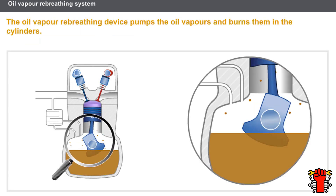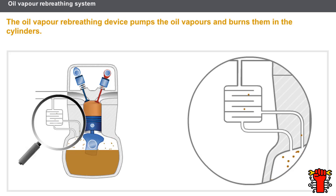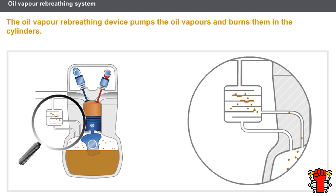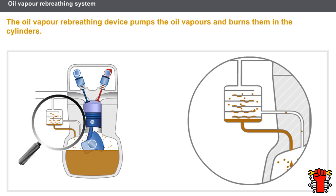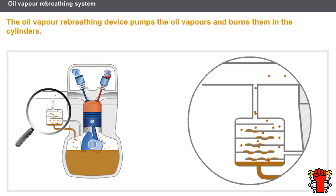The oil vapour rebreathing system carries out the following functions: it aspirates the oil vapours that come from the oil pan, condenses the vapours in a separator, channels the oil back into the oil pan, and directs the residual vapours into the inlet manifold to be burned in the cylinders.